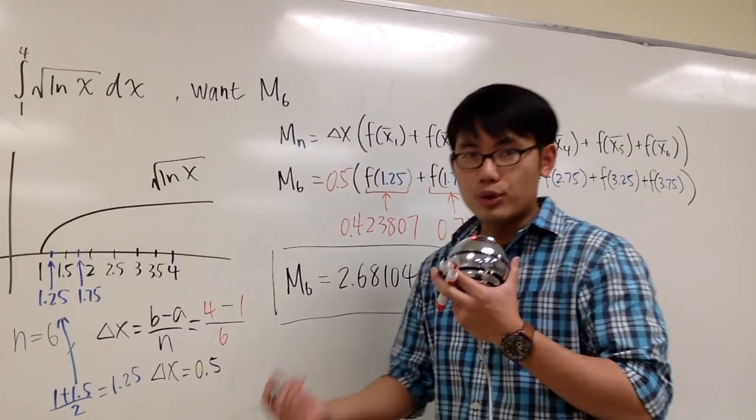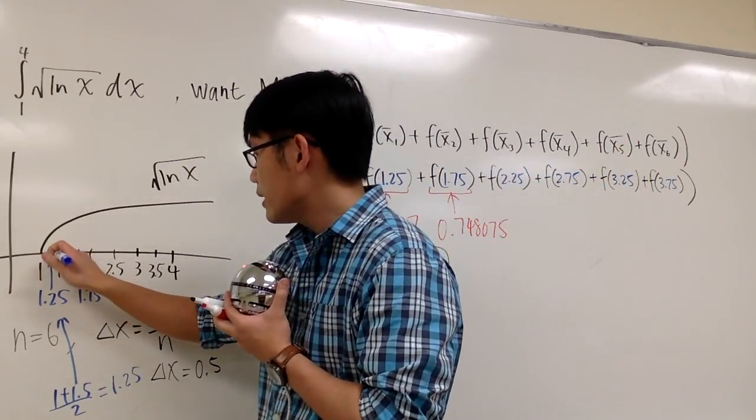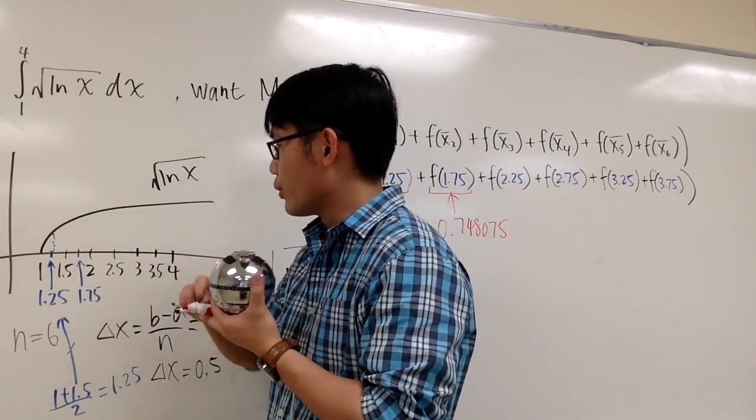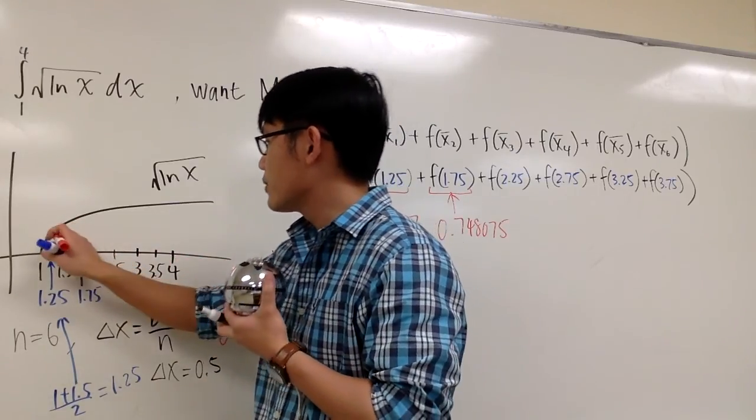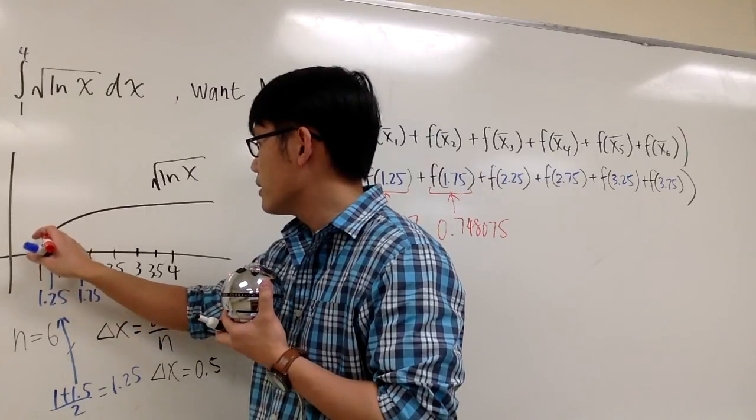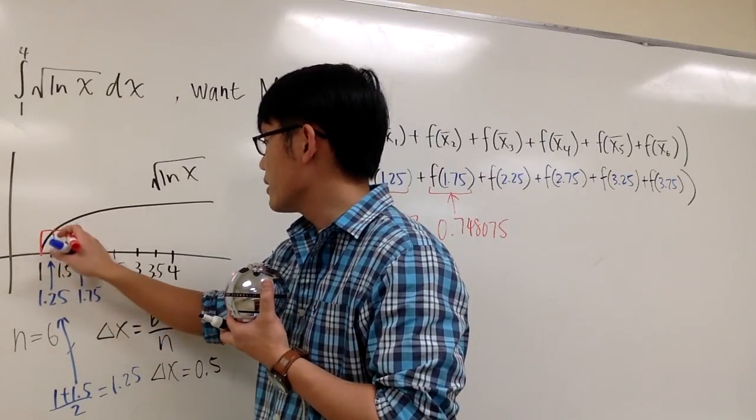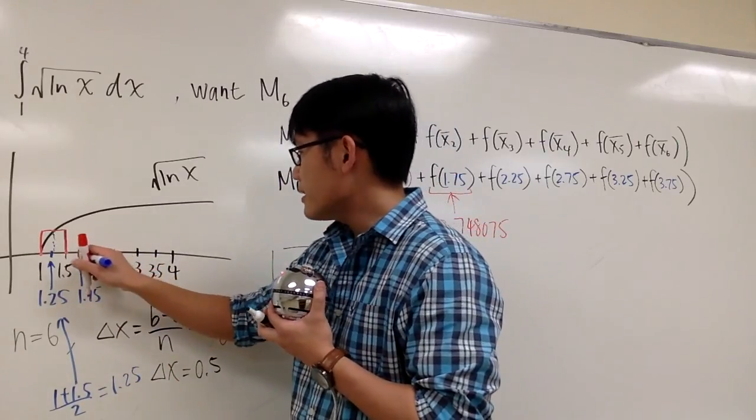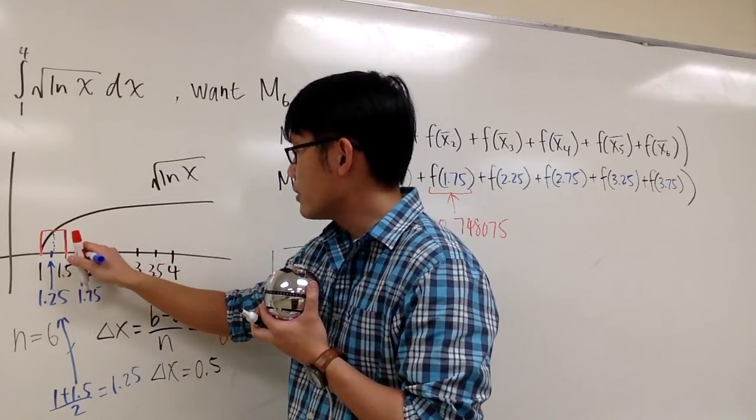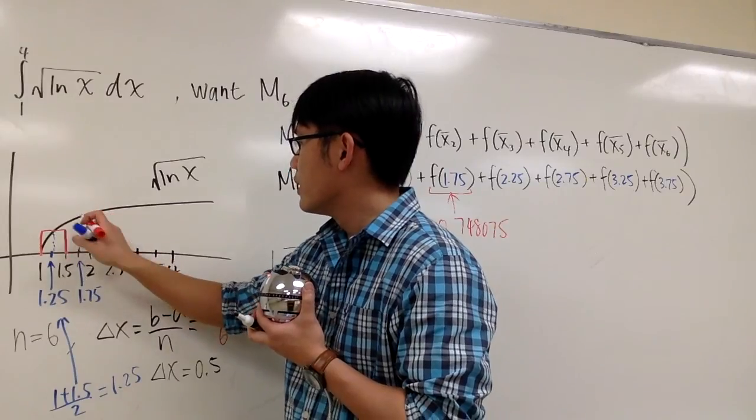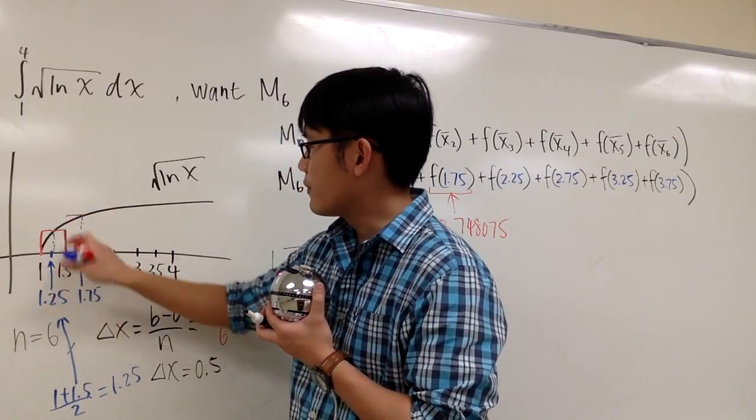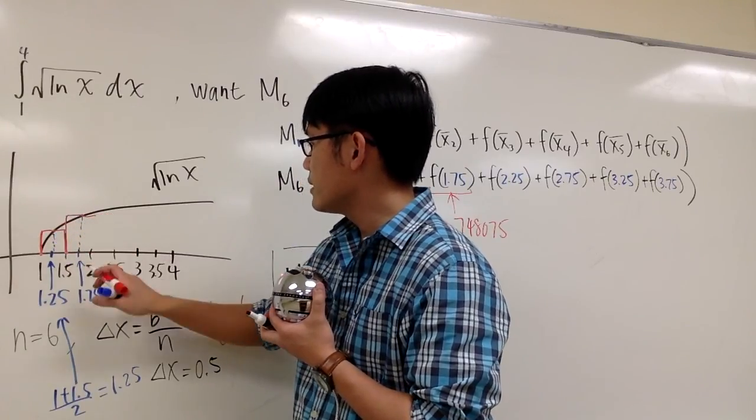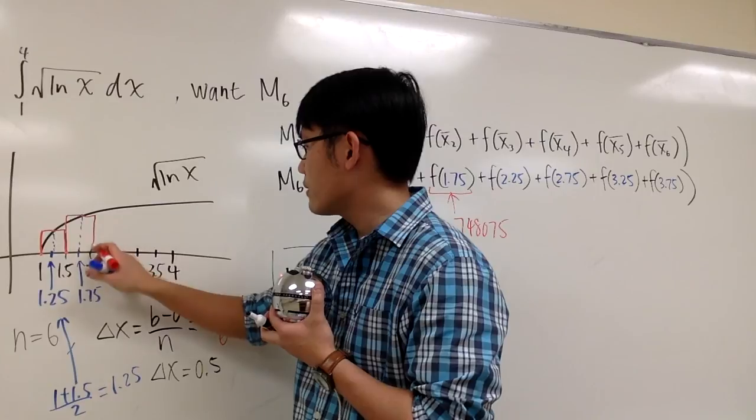Starting in the middle, you go up. Once you hit the curve, you go to the left and you go to the right. So you go to the left up to 1, and then you go down and draw a rectangle, and then you go to the right, go down like that. The next rectangle, you start in the middle and you go up. Once you hit the curve, go to the left up to 1.5, you go down, and then you go from here to the right. Once you hit 2, you go down like that.